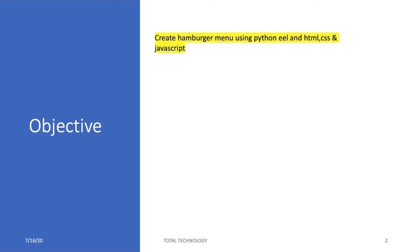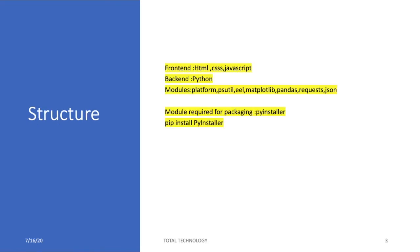I won't be using Bootstrap in this tutorial, but later on for styling we'll definitely need it. This is purely HTML, CSS, JavaScript, and Python. The structure is: front-end will be HTML, CSS, JavaScript; back-end Python; and the only module we'll actually use is Eel.